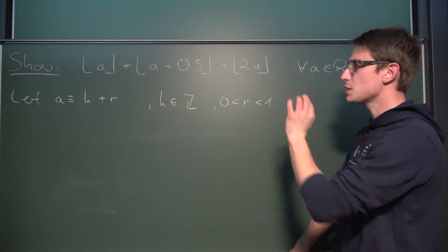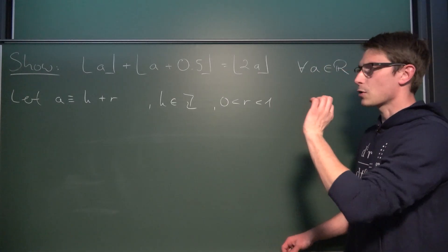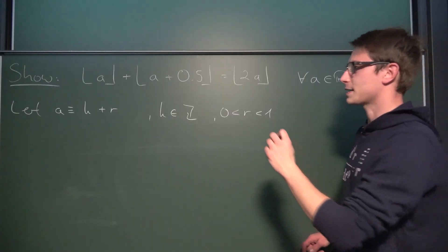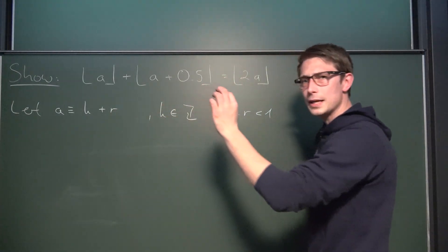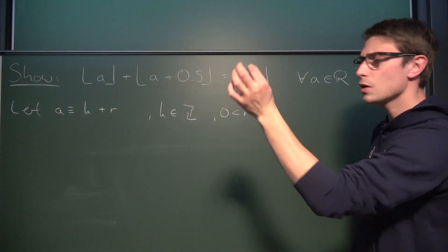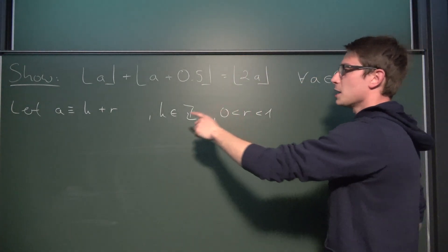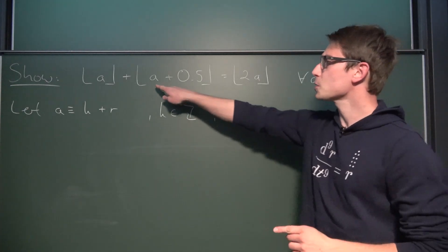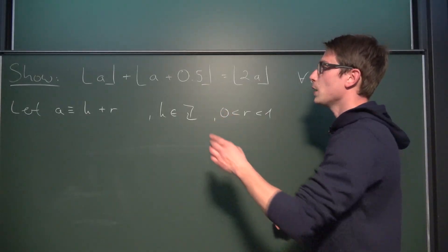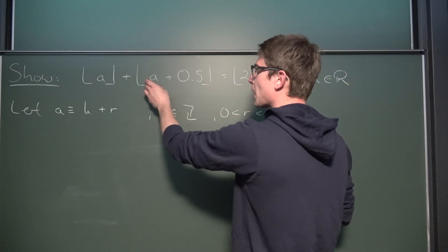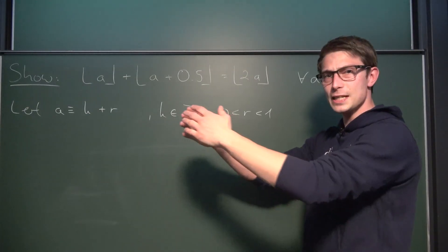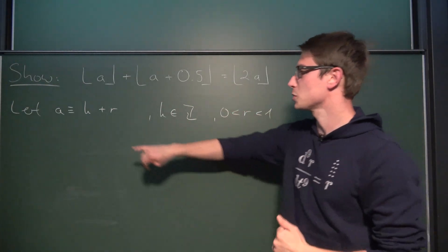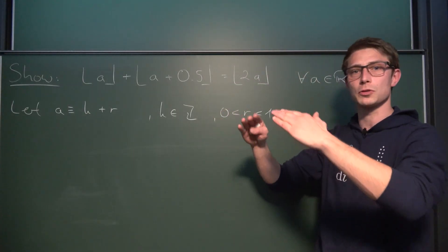Now we can go ahead and plug our new definition in. And we are going to do a bit of casework here in the sense that we are going to take a look exactly at when r is less or greater than a certain threshold. Because if r were, for example, 0.5 exactly, what were to happen with the second floor function here? Well, then we would have something plus 0.5, plus 0.5. This would get us the next higher integer, meaning we wouldn't round down to just k. We would round down to k plus 1.